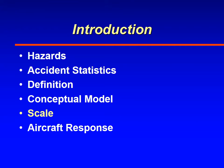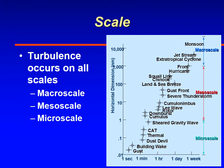As far as the scale of turbulence, this diagram shows along the vertical axis the horizontal dimension of all sorts of eddies, and along the bottom is the time scale — in other words, how long the turbulence lasts. We can break turbulence down into different scales depending upon the size of the eddy: macroscale, mesoscale, or microscale types of eddies.